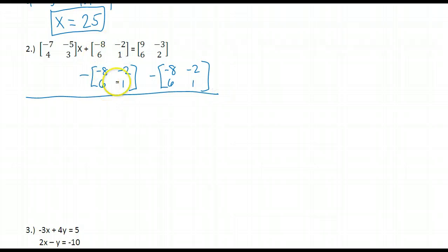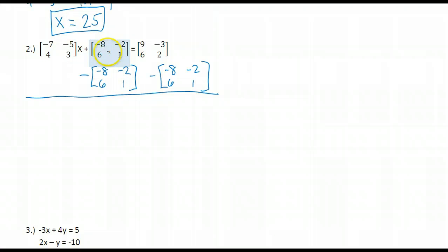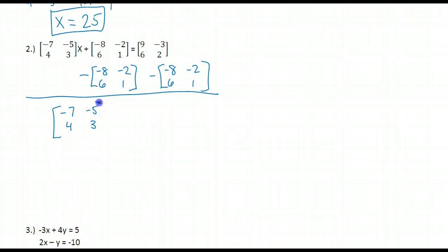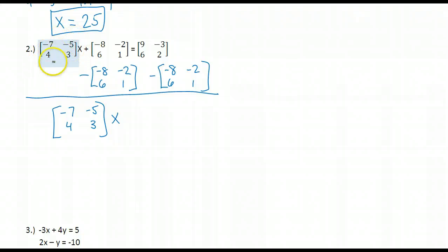When I subtract these two matrices, I end up with the identity matrix 0, 0, 0, 0. And whenever I add anything to the identity matrix 0, 0, 0, 0, I end up with that anything — in this case, this matrix times x. These two things don't undo each other; I get the identity, which then gives me what I have right here.